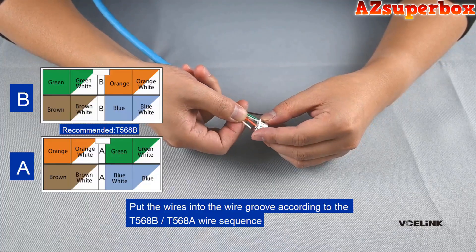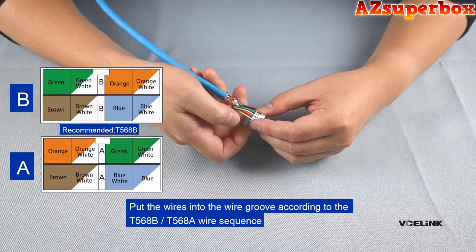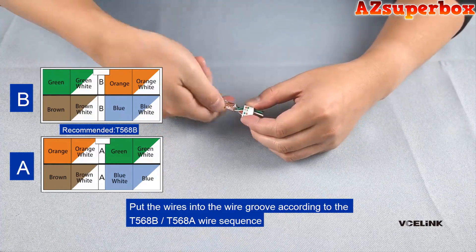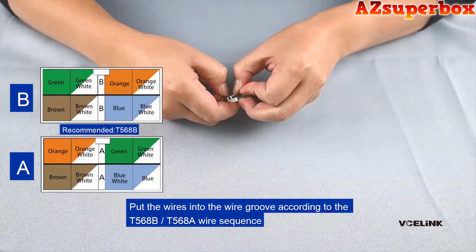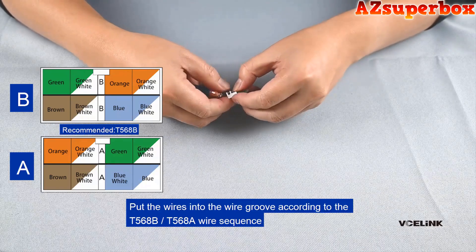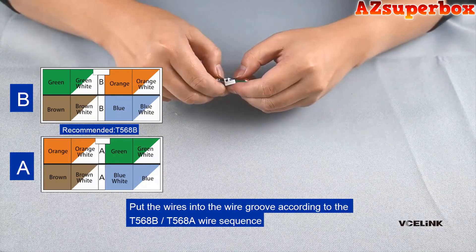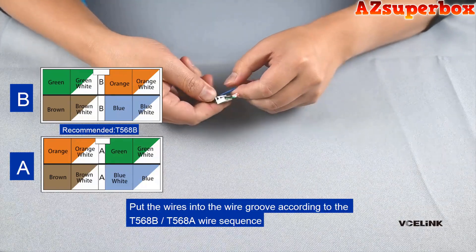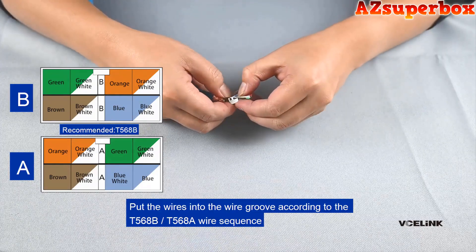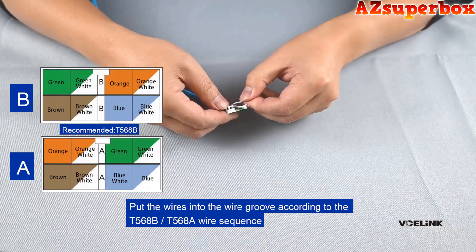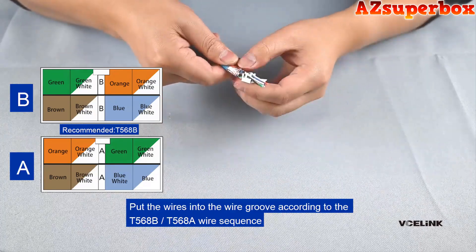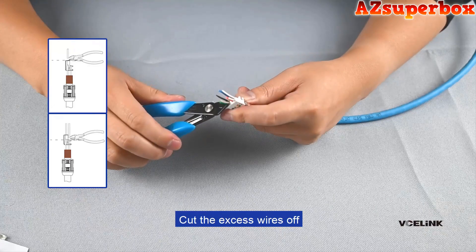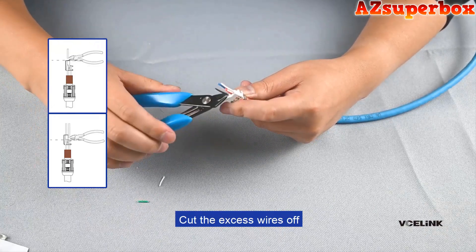Put the wires into wire groove according to T568B or T568A wire sequence. Cut the excess wires off.